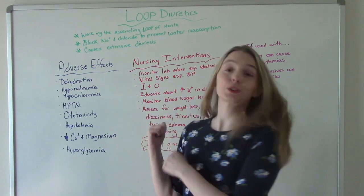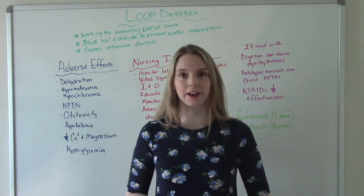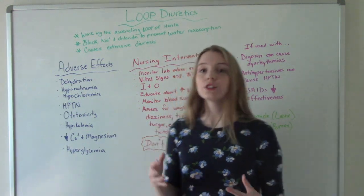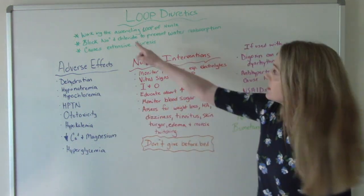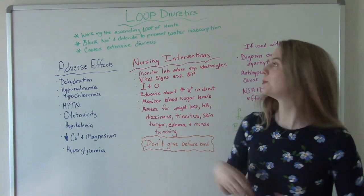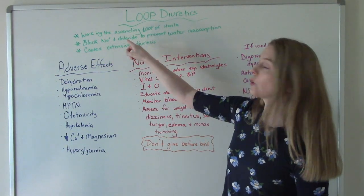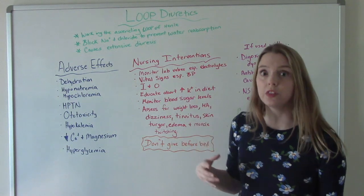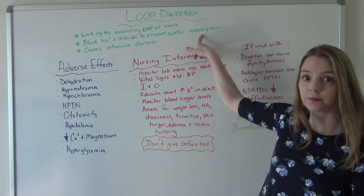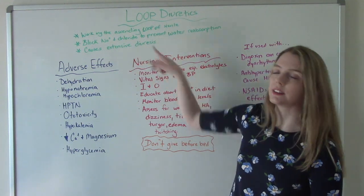The first group of diuretics we're going to talk about are loop diuretics. They're called that because of where they work in the body — specifically, they work in the ascending loop of Henle. What they do is they block sodium and chloride, which will then prevent water reabsorption.